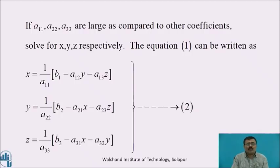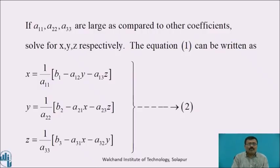solve for x, y, z respectively. Equation 1 can be written as: x is equal to 1 upon a11 into b1 minus a12y minus a13z; y is equal to 1 upon a22 into b2 minus a21x minus a23z; z is equal to 1 upon a33 into b3 minus a31x minus a32y. Call it as equation number 2.